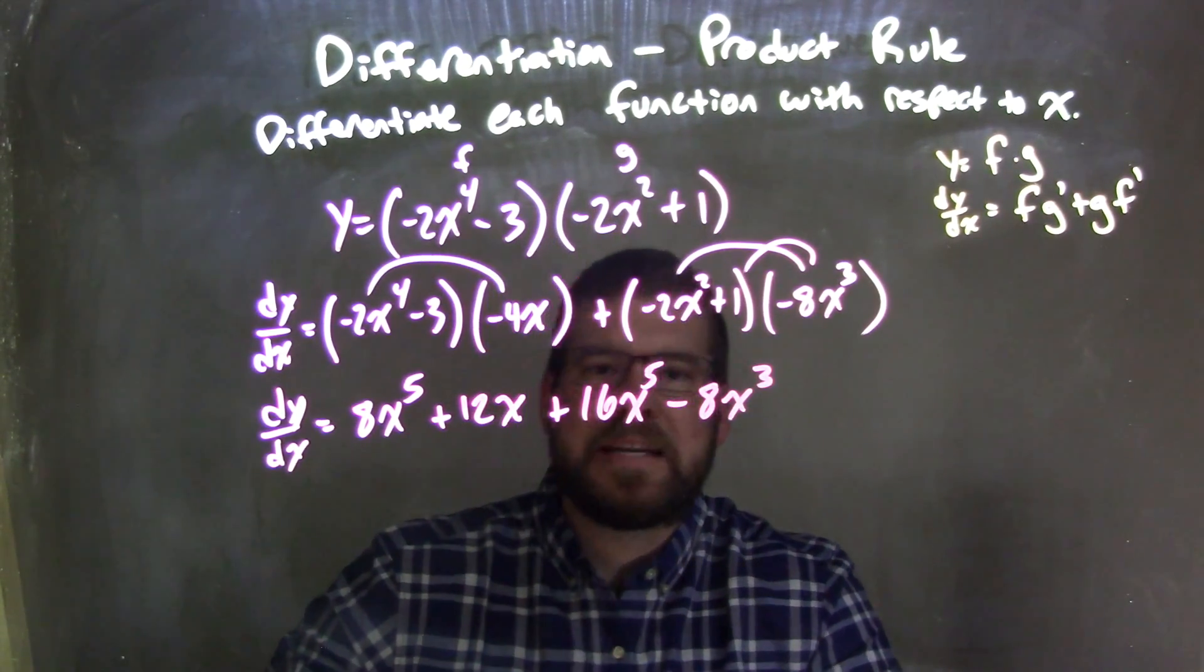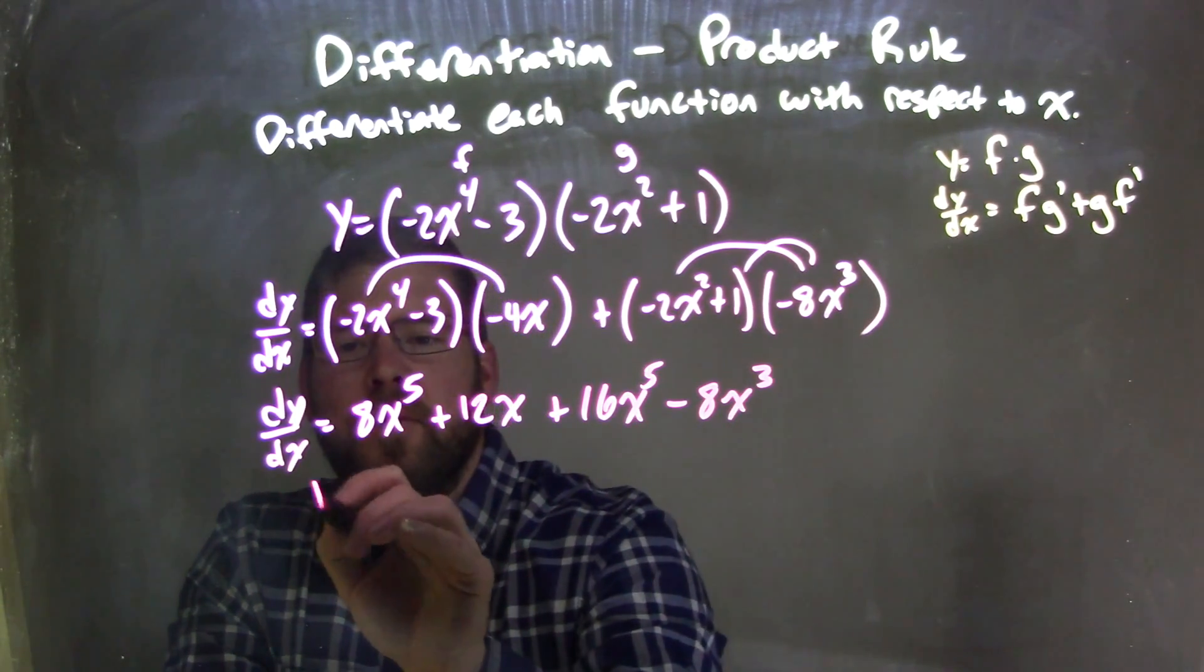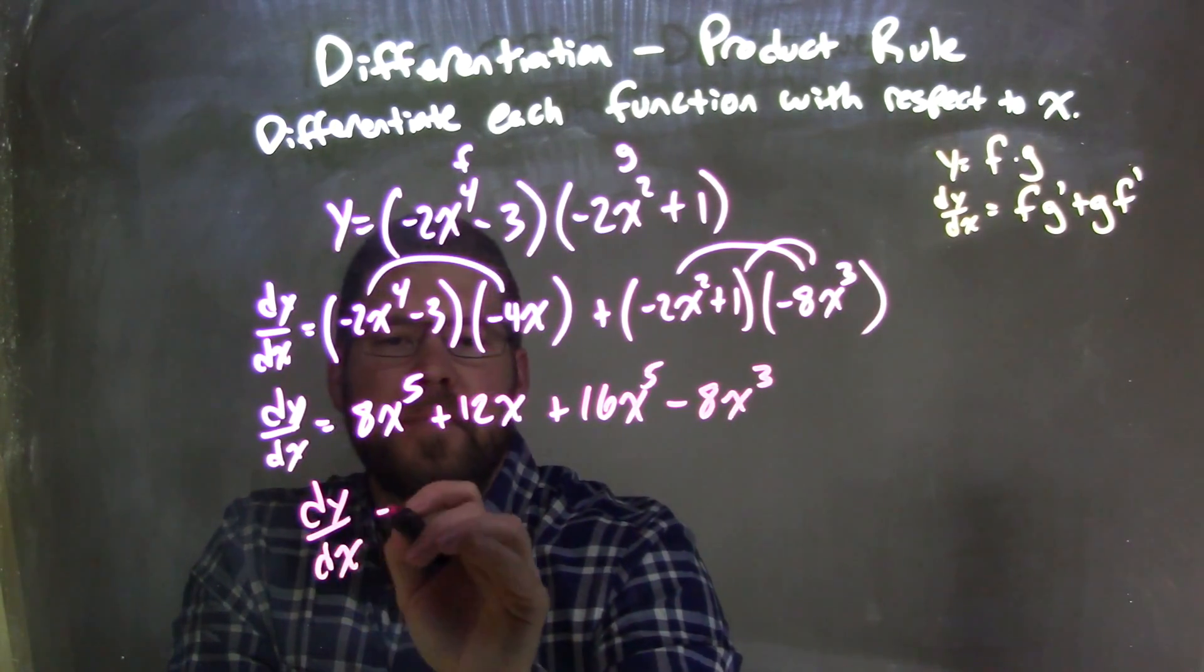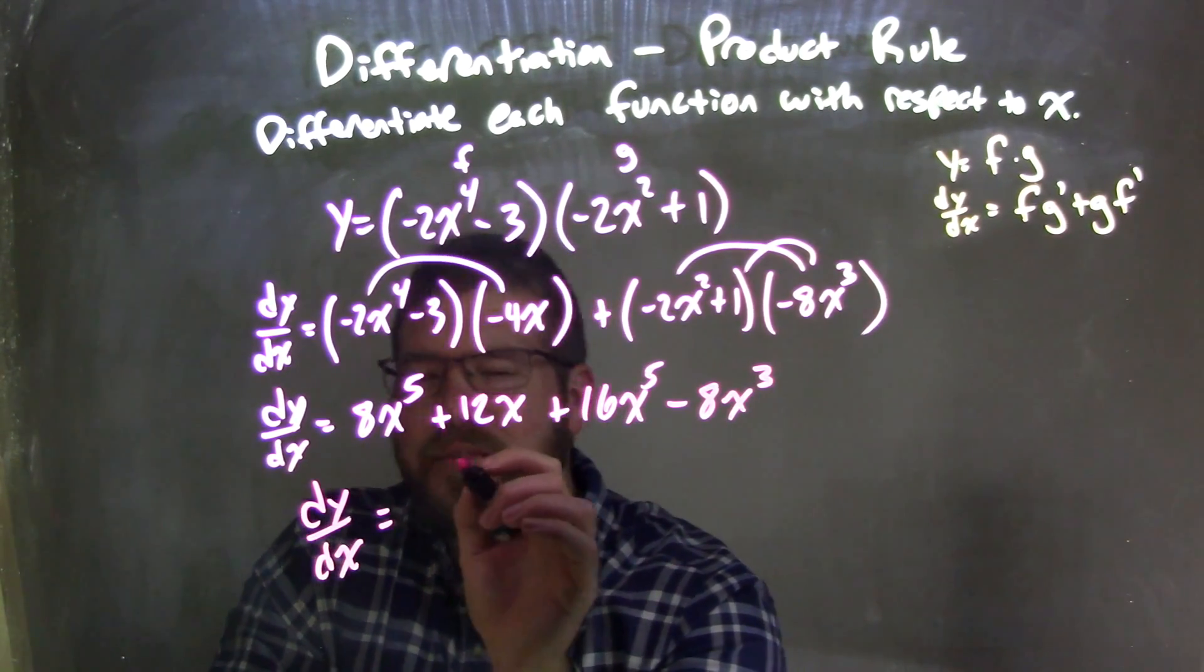Now we look, can we simplify anything and rearrange and have our highest degrees first. Highest degrees are our 5s, so we combine them, so our dy/dx here. Well, 8x to the 5th plus 16x to the 5th, I would have to say is 24x to the 5th.